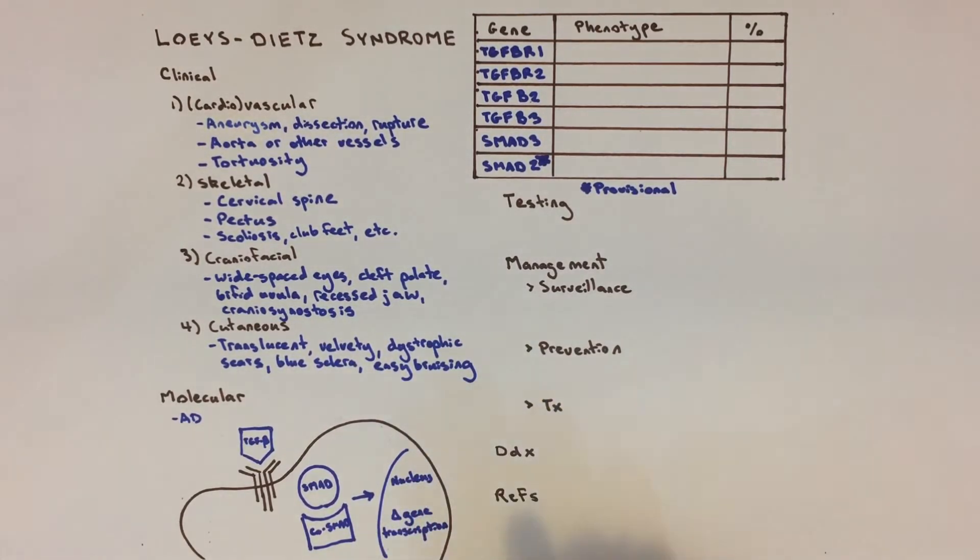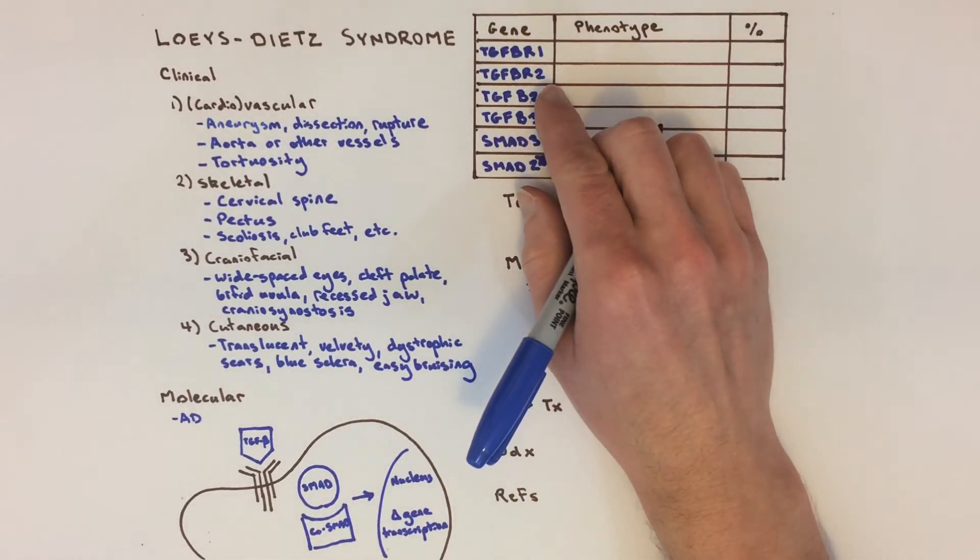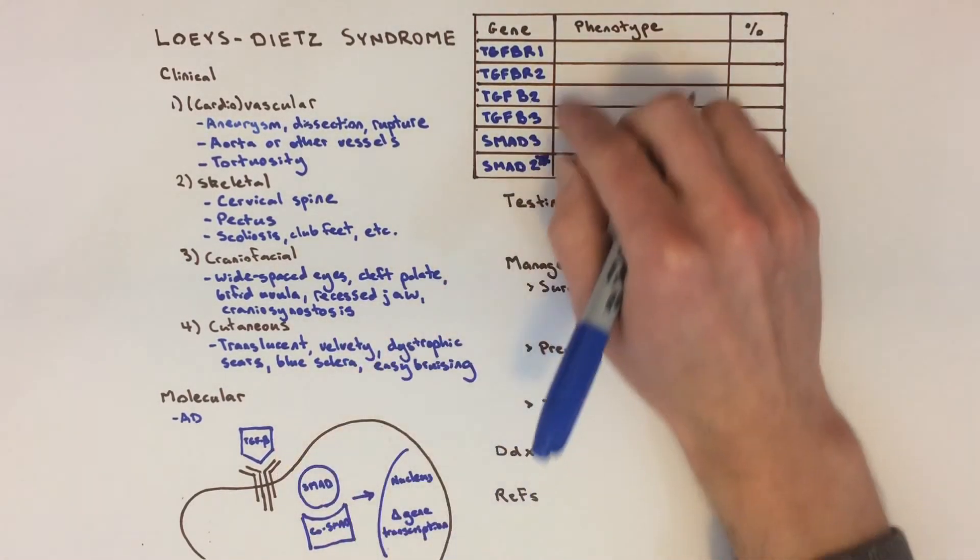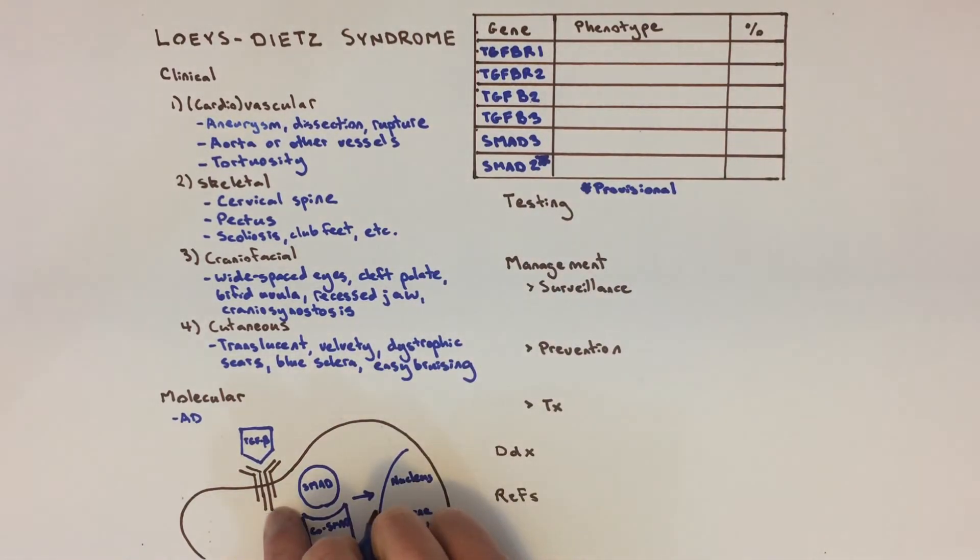Specifically, Loeys-Dietz can be caused by mutations in the genes for TGF-beta 2 or 3, TGF-beta receptor 1 or 2, which are the two most frequent causes, and SMAD3.